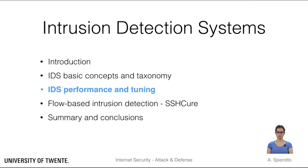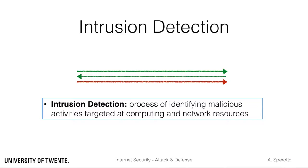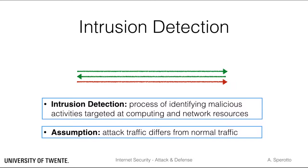In this set of slides we will talk about the performance and tuning of an IDS. We mentioned that the goal of an IDS is to identify and discriminate between malicious and normal or benign activities, for example between attacks and normal traffic. We also said that the key assumption behind the functioning of an IDS is that attack traffic differs from normal traffic. Let's now see why this is a key assumption and what this means for the detection process.